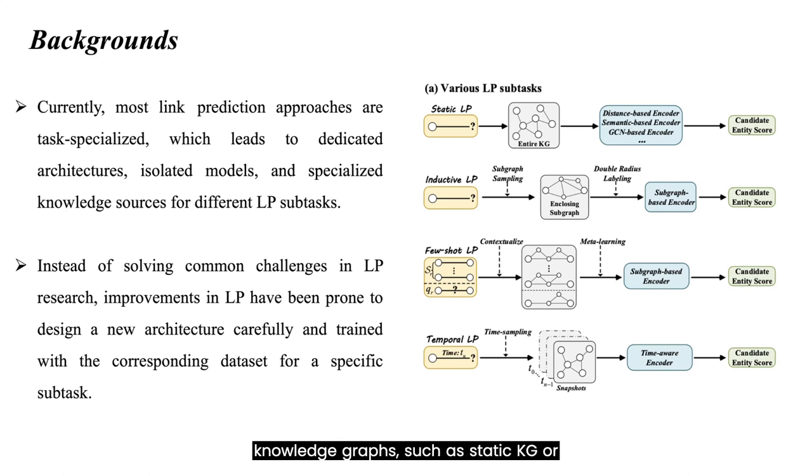Different types of knowledge graphs, such as static KG or temporal KG, lead to highly specialized encoders. Moreover, to adapt to more realistic and challenging downstream task objectives, for example, few-shot setting and inductive setting, additional training schemes such as meta-learning are applied in some subtasks.